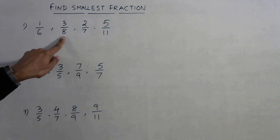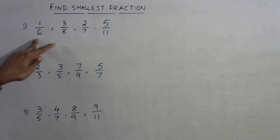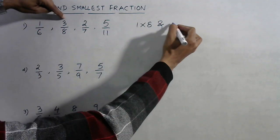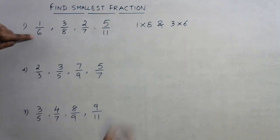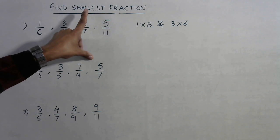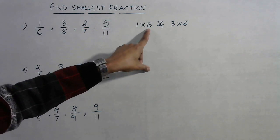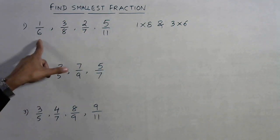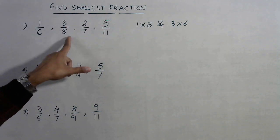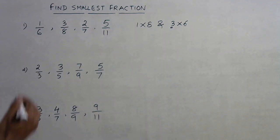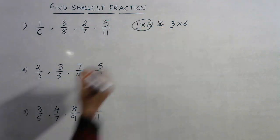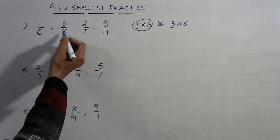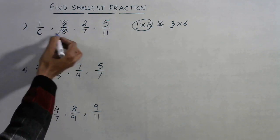Take the first two fractions, 1/6 and 3/8, and cross multiply: the numerator of the first with the denominator of the second, and the numerator of the second with the denominator of the first. To find the smallest, 1 into 8 is 8 and 3 into 6 is 18. The smaller product is 8, so the fraction with numerator 1 is smaller. Since we need the smallest, we discard the largest, which is 3/8.